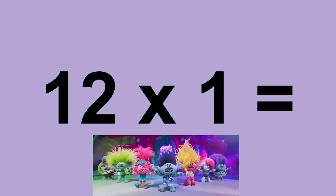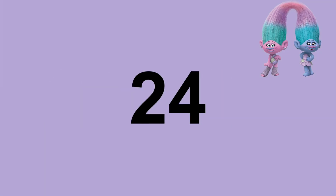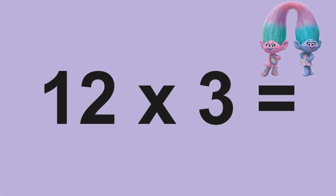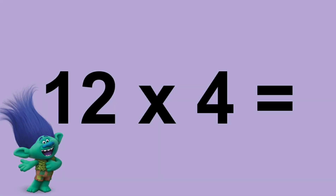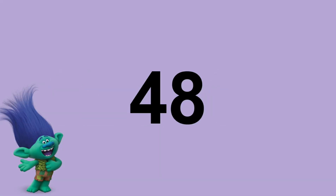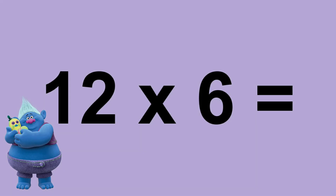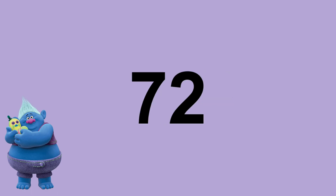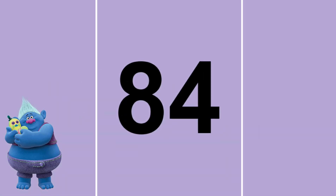Twelve times zero equals zero. Twelve times one equals twelve. Twelve times two equals twenty-four. Twelve times three equals thirty-six. Twelve times four equals forty-eight. Twelve times five equals sixty. Twelve times six equals seventy-two. Twelve times seven equals eighty-four.